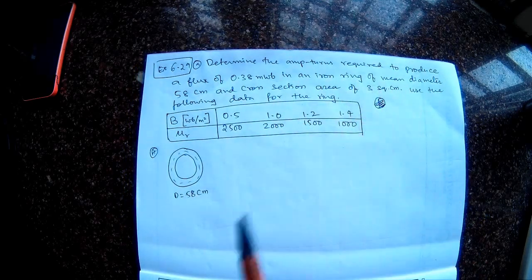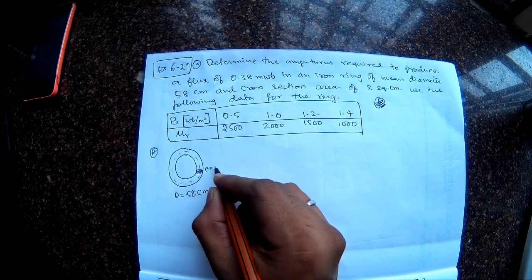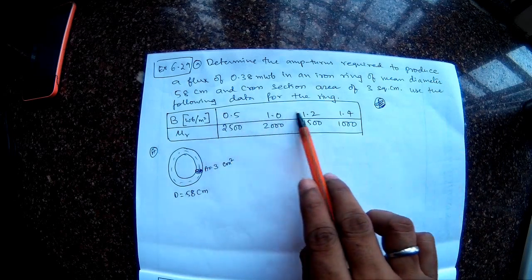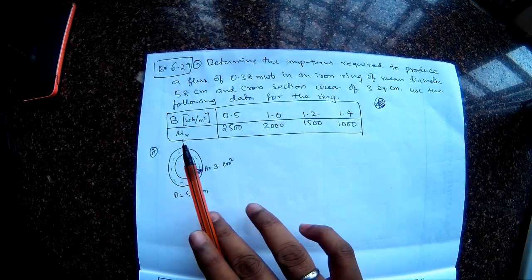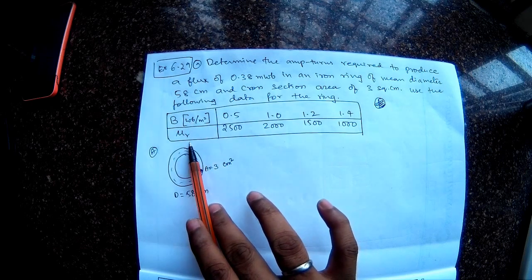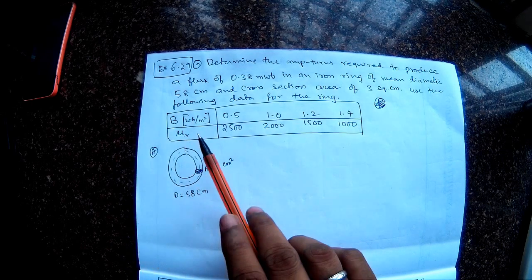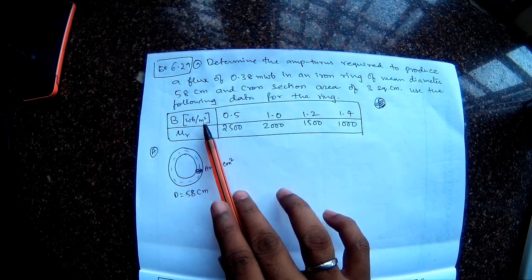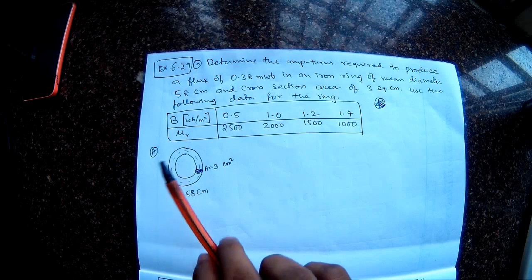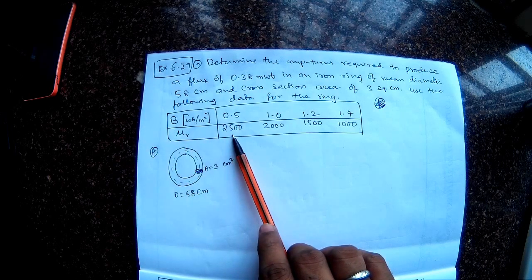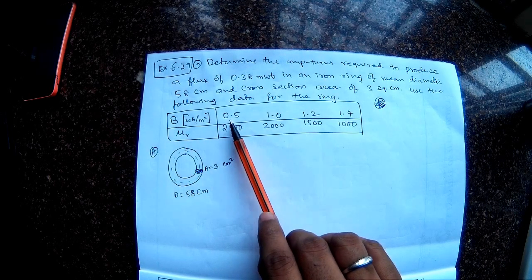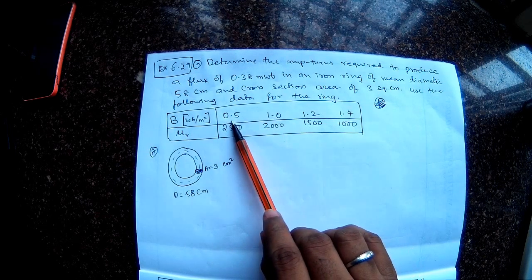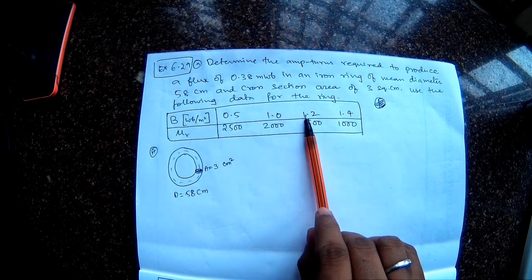And cross-section area is 3 square centimeters, so this cross-section area is 3 centimeters square. Use the following data for the ring. If you look at the data, we have B and mu R. So normally you will know what is the flux density and the electric field intensity H, but here if you notice B and mu R are given, so the relative permeability of the material itself is a function of the flux density.